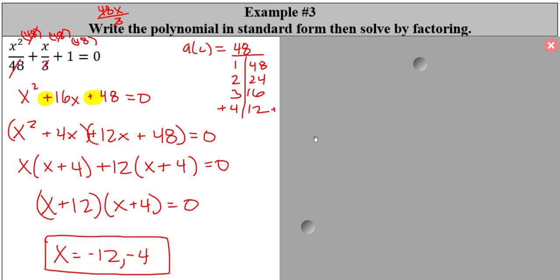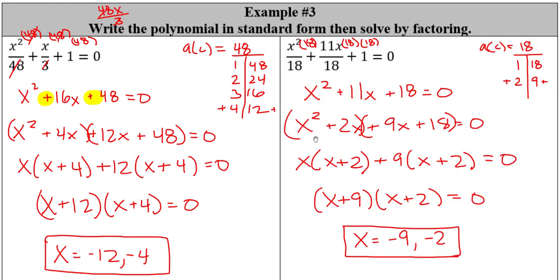Pause the video and try the next one on your own. Welcome back. The lowest common multiple for that one was 18. I multiplied that across the board. The AC value is 18, plus and plus, looking at 9 and 2. We split those up and get x = −9 and x = −2. So if you see something with fractions, easy — just clear them out.